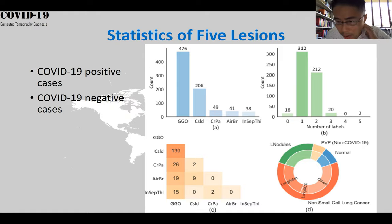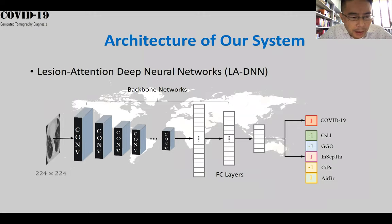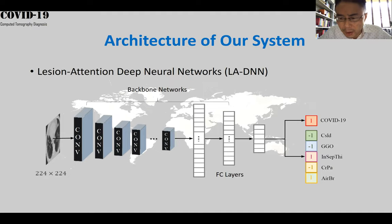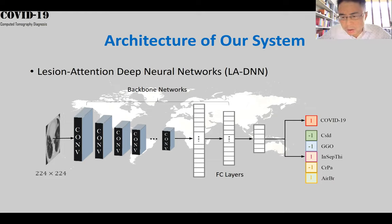Negative cases means non-COVID-19, which includes other pneumonia, cancer, and normal people. Here's the architecture of our lesion attention deep neural network. We have backbone networks using well-trained, popular, powerful networks. And then at the end we have fully connected layers — one branch goes to binary classification of COVID-19, and the other branch goes to the five-lesion multi-label learning.